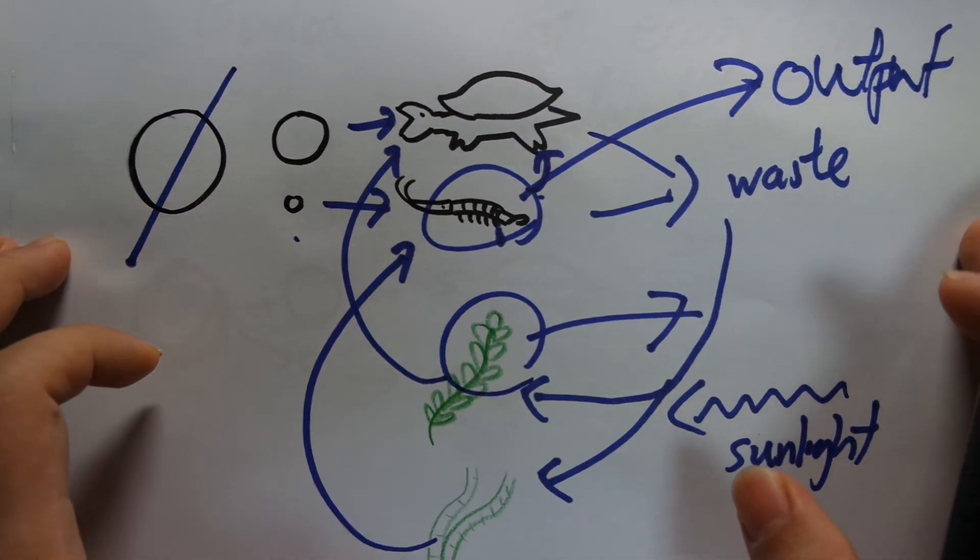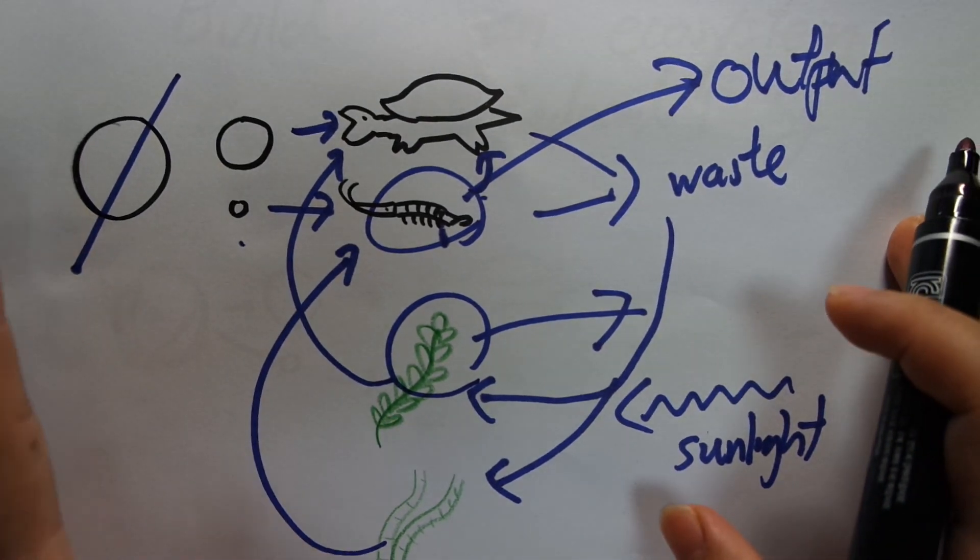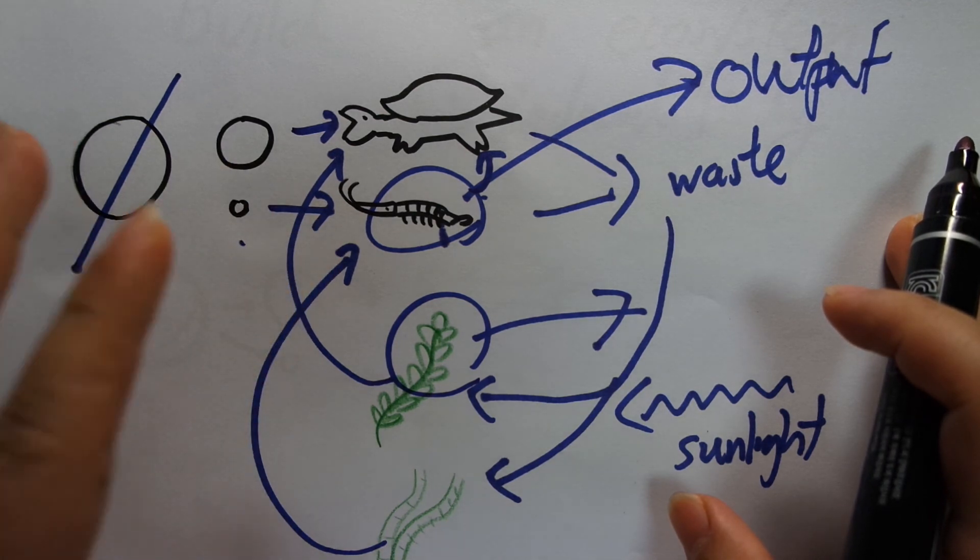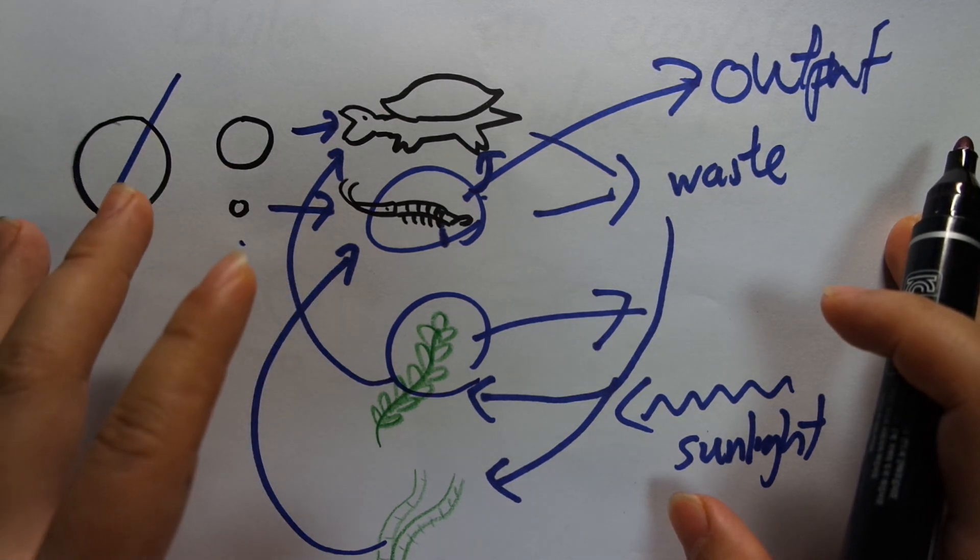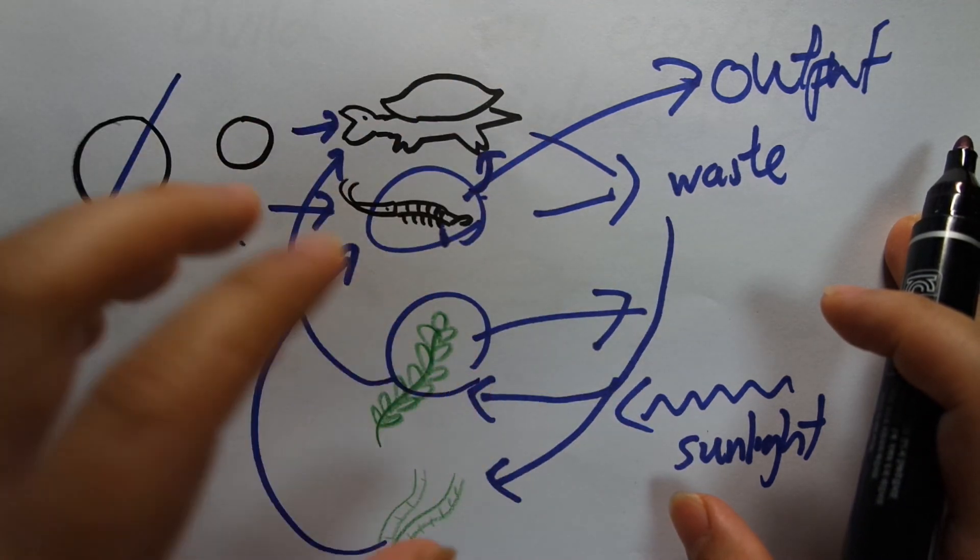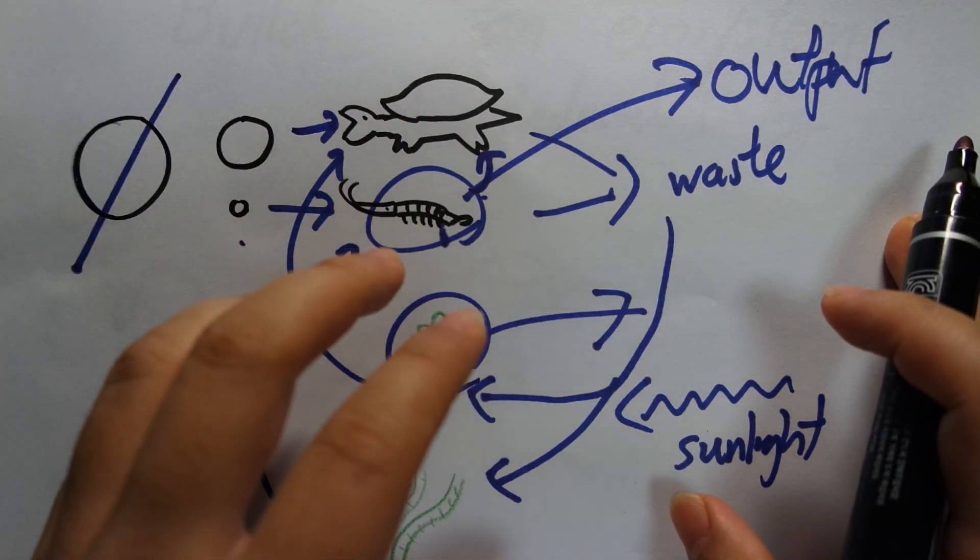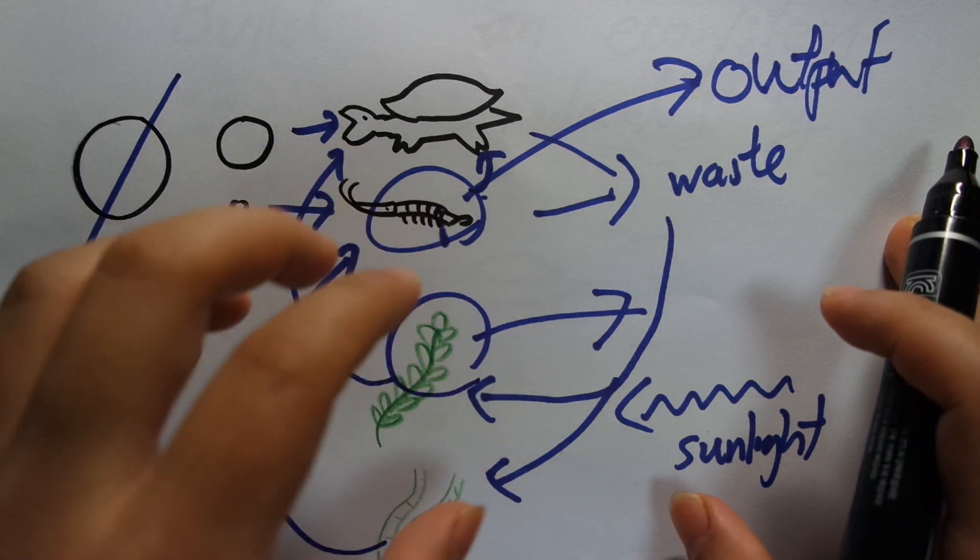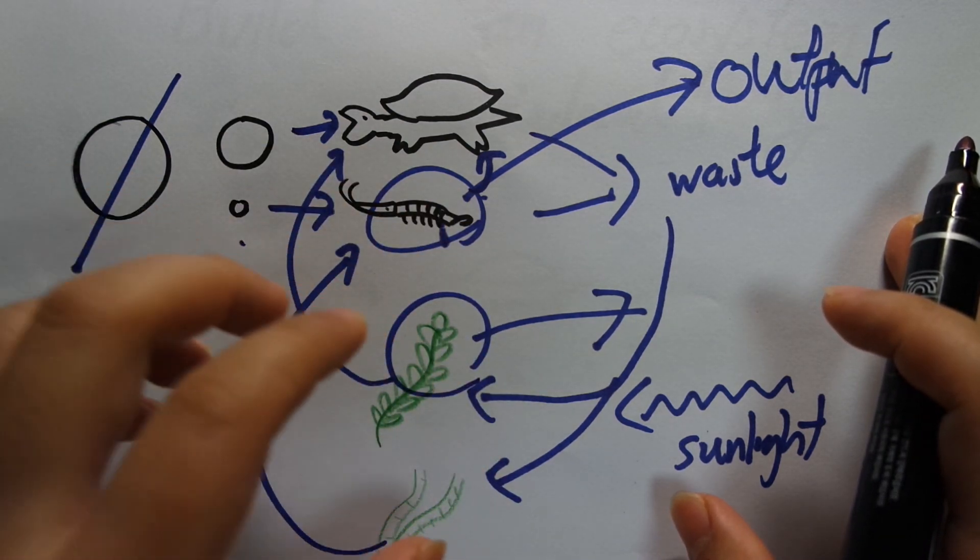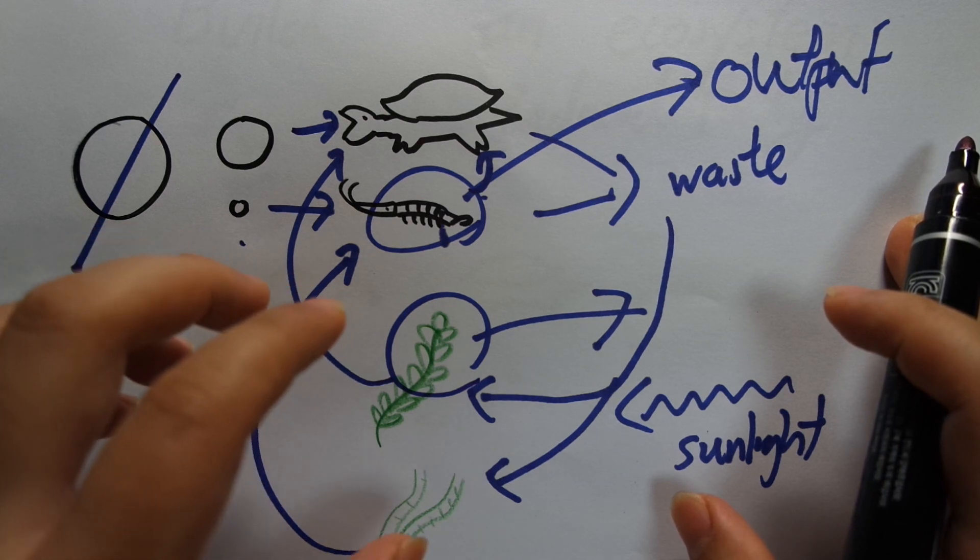So that concludes part 7 of my no water change series. Basically we should be thinking more about how to reduce the feeding, and how building an ecosystem by producing these loops reduces the need for feeding. So just by building some sort of ecosystem, you can drastically reduce your feeding and make it drastically easier to accomplish a no water change tank.